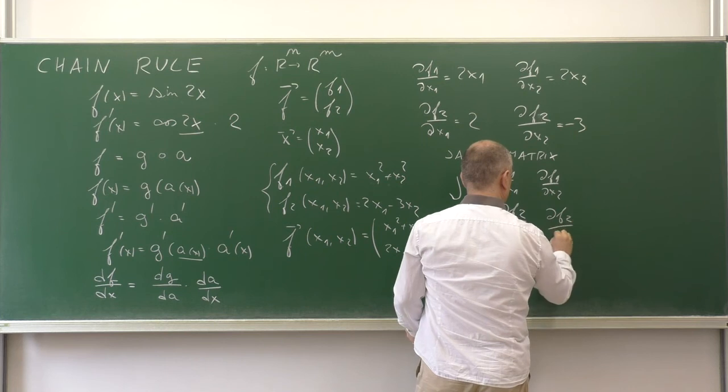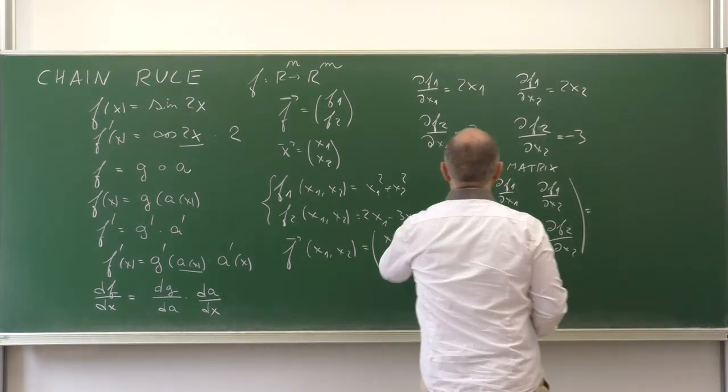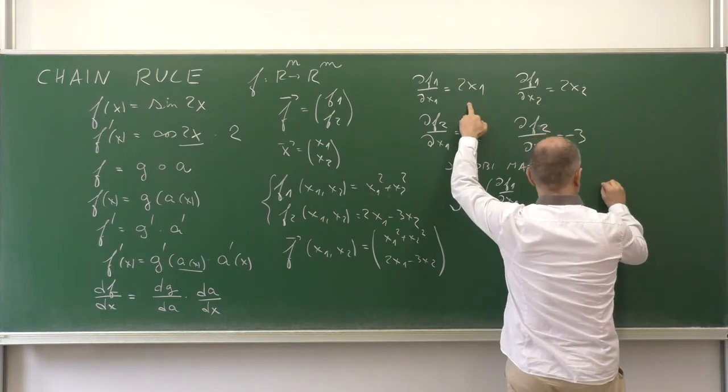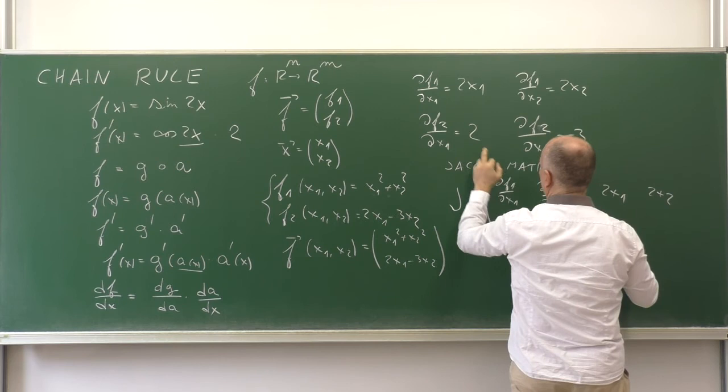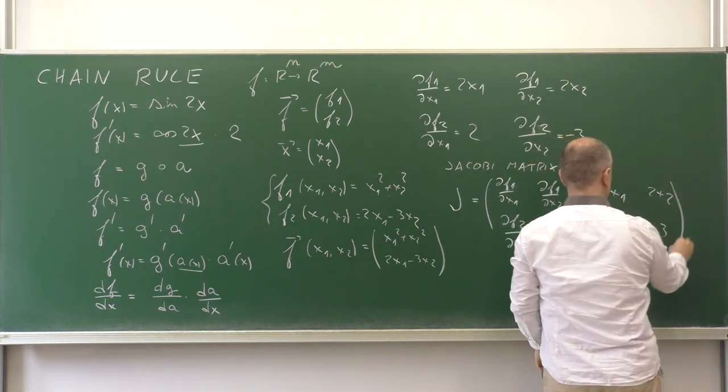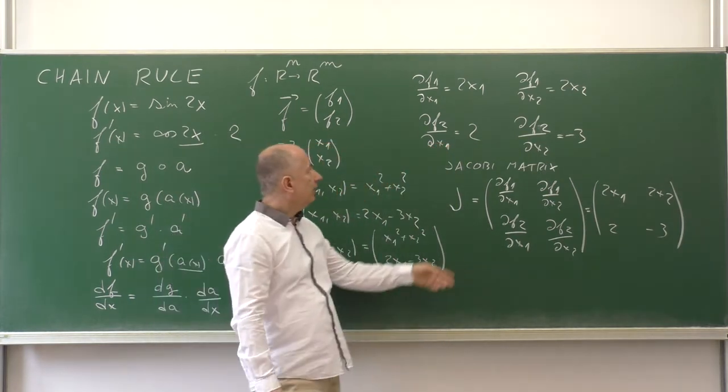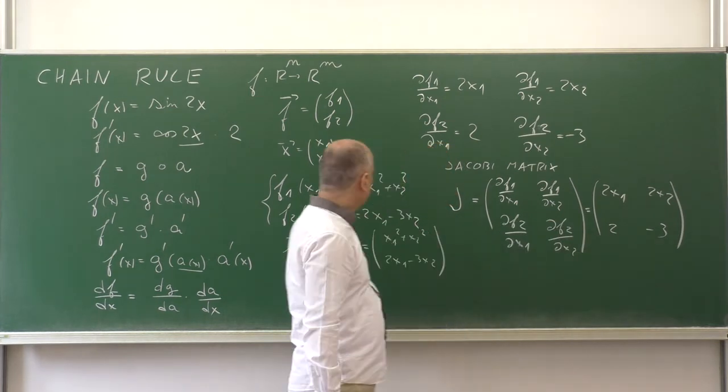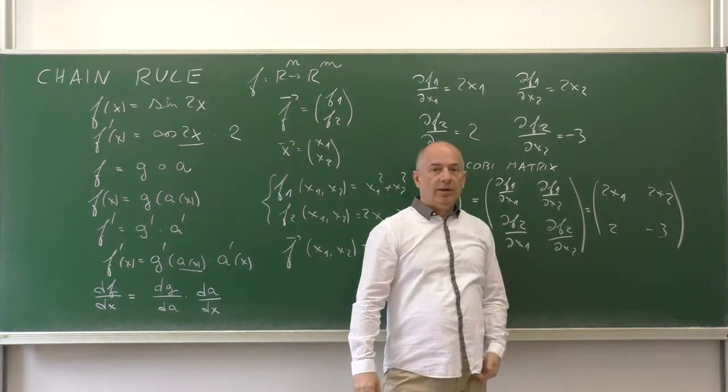Which is in our case: [2x₁, 2x₂; 2, -3]. And if you give me the numerical value for x₁ and x₂, I can evaluate not just the function, I can evaluate the Jacobi matrix.